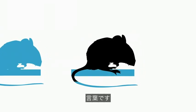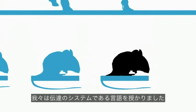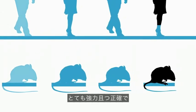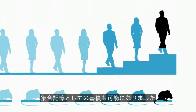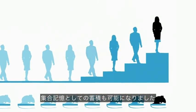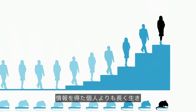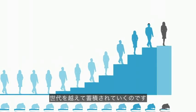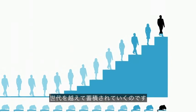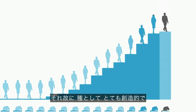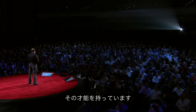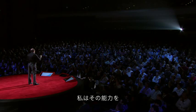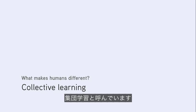What makes humans different is human language. We are blessed with a system of communication so powerful and so precise that we can share what we've learned with such precision that it can accumulate in the collective memory — outlasting the individuals who learned it, accumulating from generation to generation. That's why, as a species, we are so creative and so powerful, and that's why we have a history. We seem to be the only species in four billion years to have this gift. I call this ability collective learning.